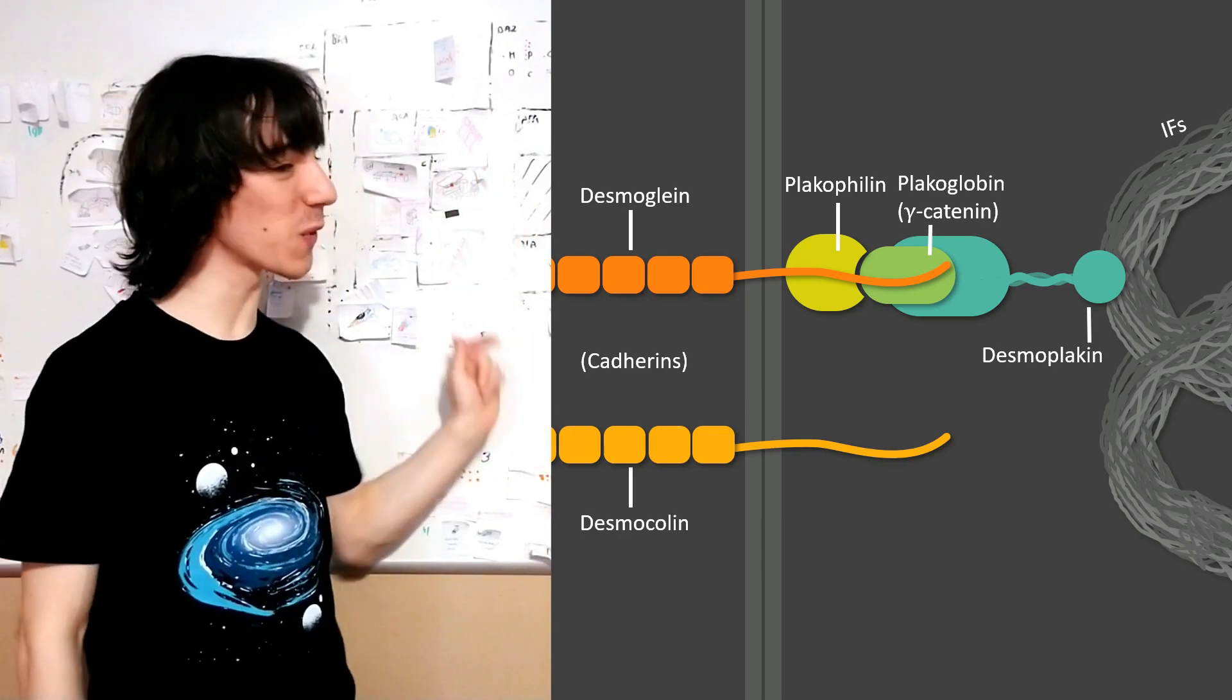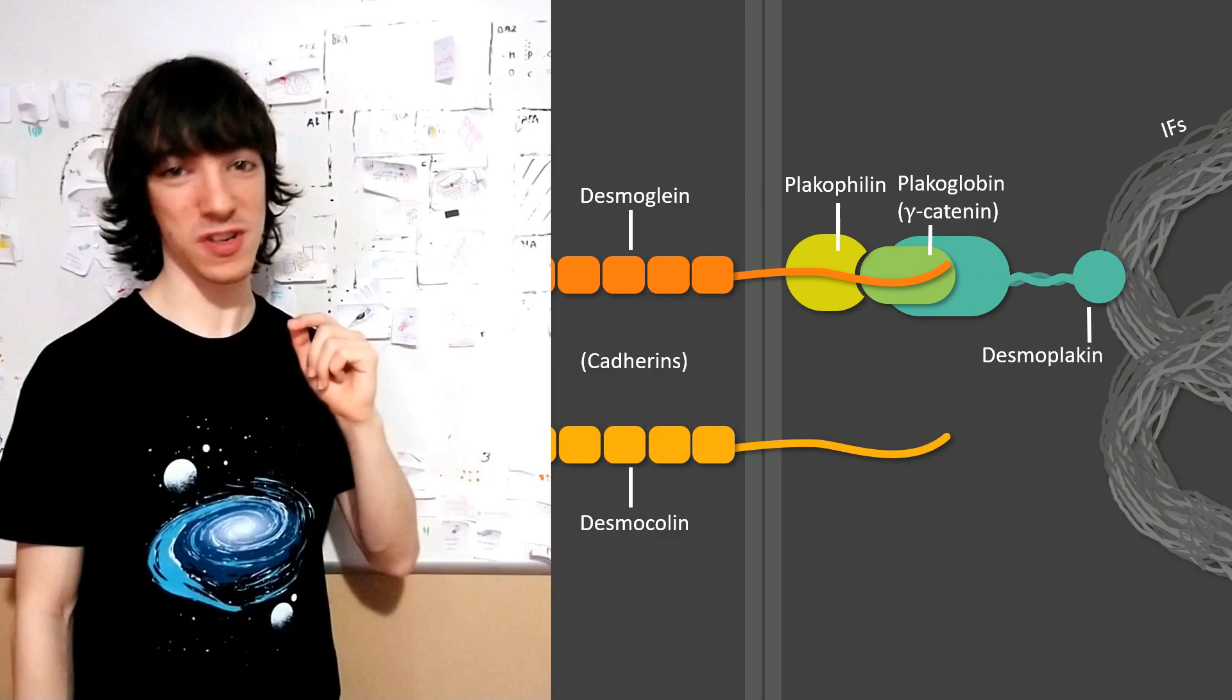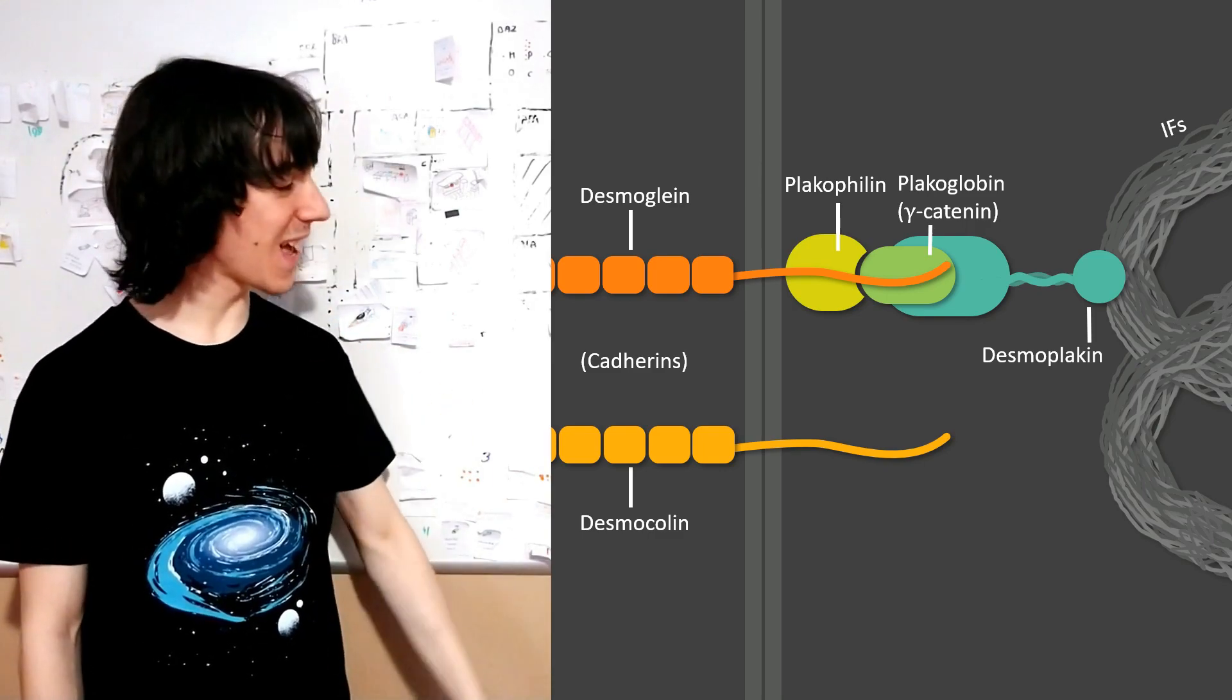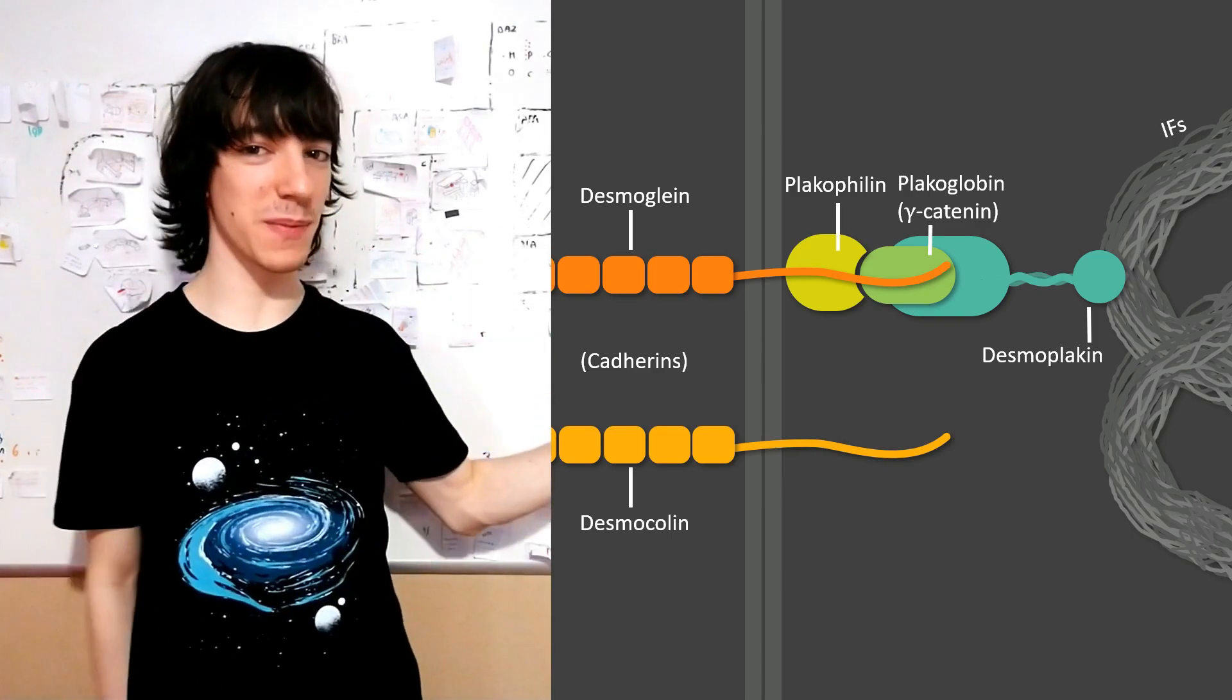By the way, don't mix up all those three desmo things. Desmoplakin and desmocollin are transmembrane proteins and desmoplakin is an adapter between cadherins and intermediate filaments.